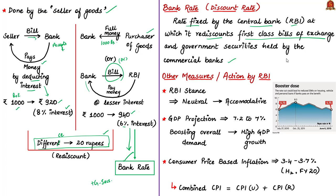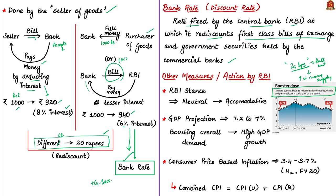The news tells that RBI cuts interest rate by 25 basis points, so if the interest rates are cut, money supply will increase in the economy overall. This also indicates that the rate cut could lead to reduced EMIs for housing, vehicle, and personal loans — but only if the banks pass on the benefit of the rate cut to their customers.